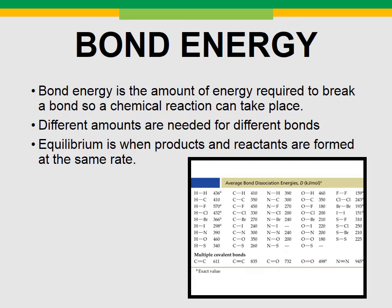Equilibrium is when you have products and reactants formed at the same rate. Things can go back and forth and maintain a certain shape, and the same substances are going to be both produced and broken down at the same rate.